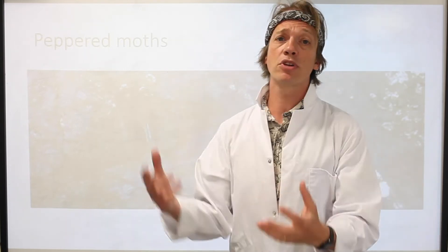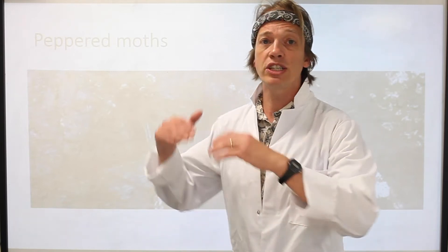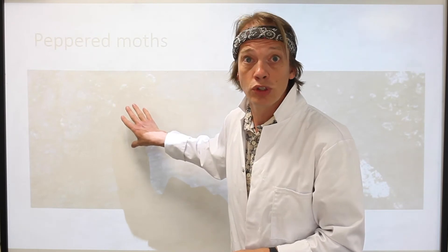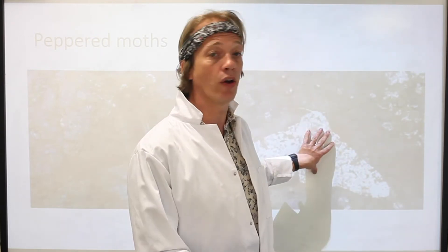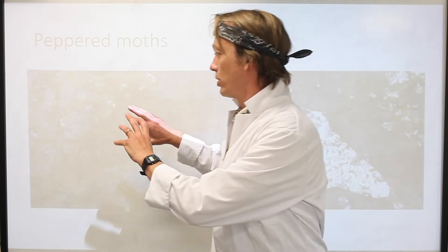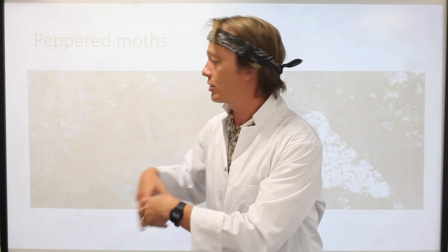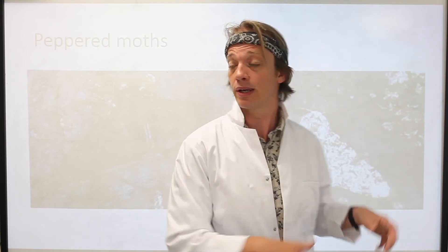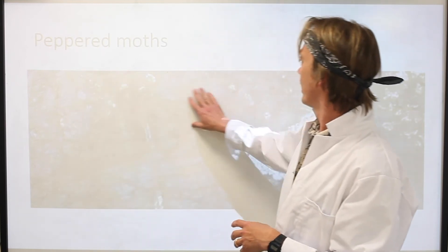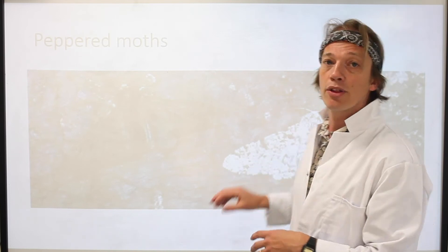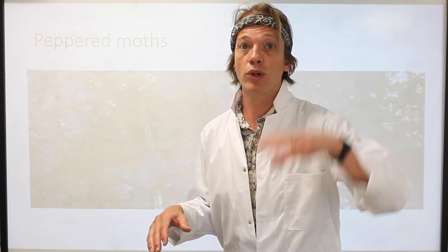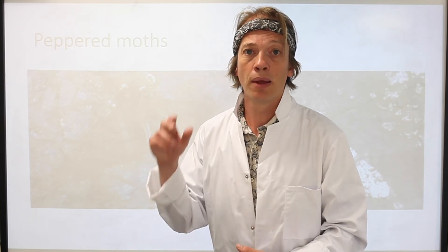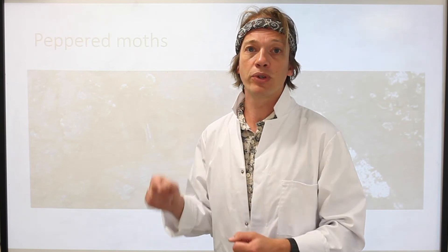What happens over time is that we're going to see changes in population numbers. We're going to see more dark moths and fewer light moths over time. As dark moths reproduce they produce dark offspring, and light moths reproduce and produce light offspring. So the numbers of dark moths will increase against this dark background and the population of light moths will decrease. That's a summary of evolution by natural selection.